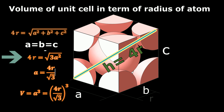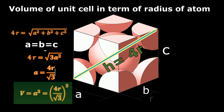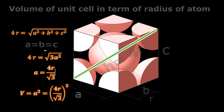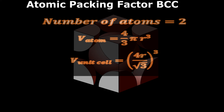Now we have 4r = √(3a²), and the square cancels with the square root. Solving this equation for 'a', the length of the side of this cube, we get a = 4r / √3. So the volume of this cube will be V = (4r / √3)³. We now have: number of atoms = 2, volume of atom = 4/3 π r³, and volume of unit cell = (4r / √3)³.